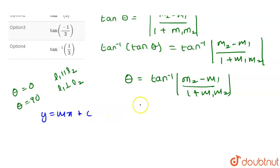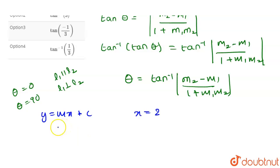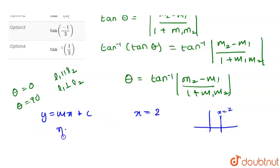Consider the given equation x = 2 and compare it with the general equation. We can see that there is no slope and no intercept, because there is no y term in this equation. Since x = 2 is a line which is perpendicular to the x-axis, there will be no y term, so we say there is no slope.